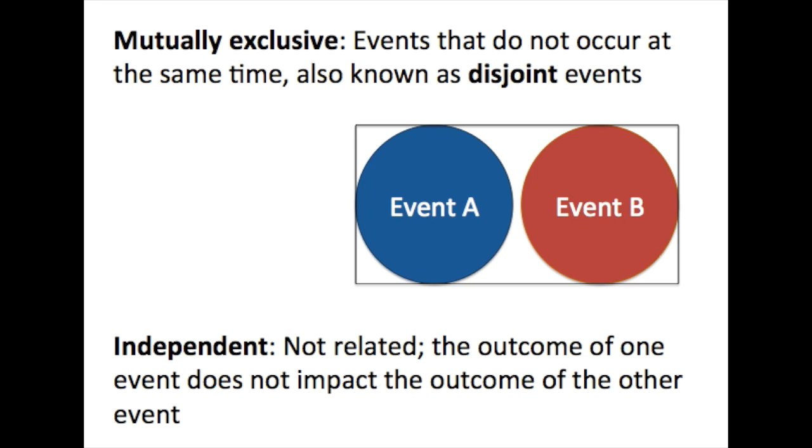Independent events are events that are not related. The outcome of one event does not impact the outcome of the other event. For example, if we rolled a die two times, the outcome of the first roll has no impact on the outcome of the second roll.